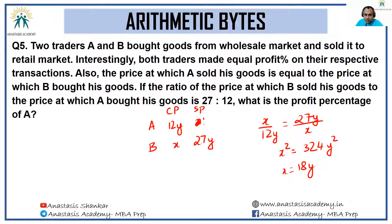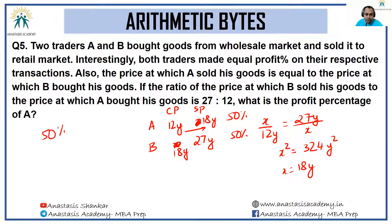With x = 18y, A's CP is 12y and SP is 18y — an increase of 6y on 12y, which is 50 percent profit. B's CP is 18y and SP is 27y — also 50 percent profit. So the profit percentage of both traders A and B is 50 percent. That will be all for the arithmetic bytes of the day — hopefully you learned something.